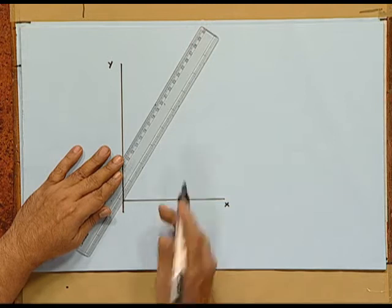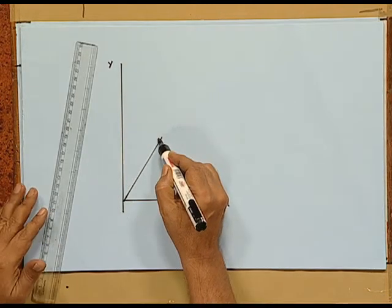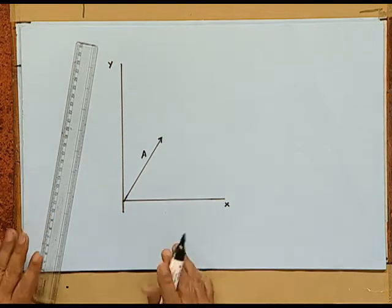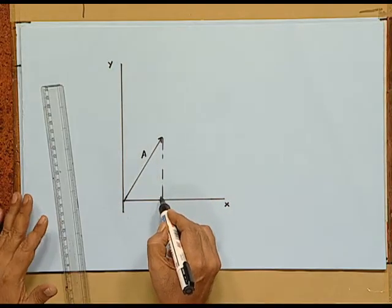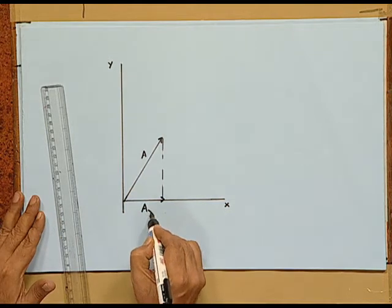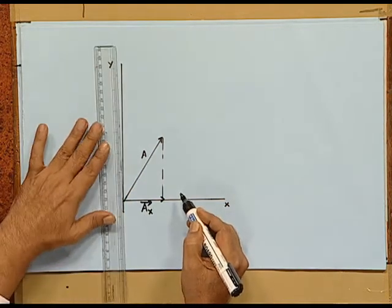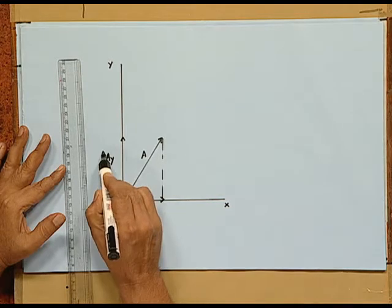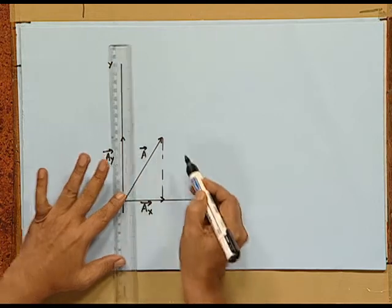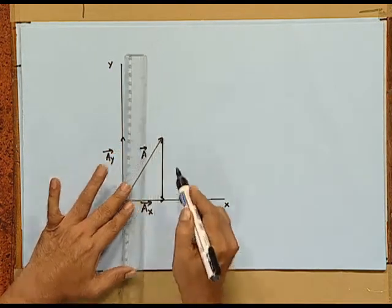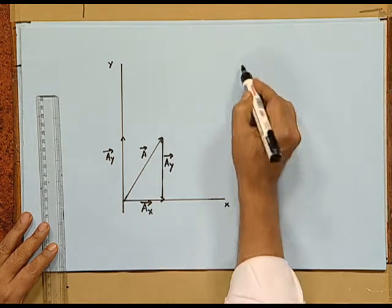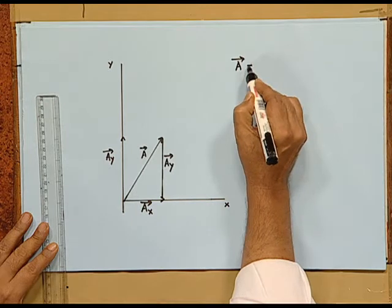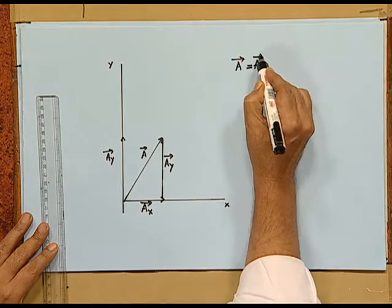Say for example, in the x-y plane, I have a vector A. This vector A is resolved into two perpendicular components by dropping a perpendicular. Along the x-axis, it is written as Ax vector. The y-component is indicated in the y direction as Ay vector. Now in the figure, vector A can be written as Ax vector plus Ay vector.